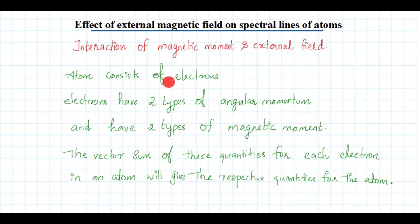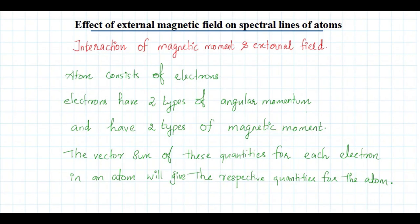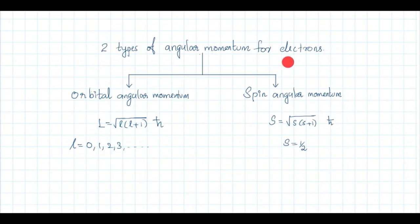Every atom consists of electrons, and each electron possesses two types of angular momentum: orbital angular momentum as well as spin angular momentum. Also, for each electron there are two types of magnetic moment: one is orbital magnetic moment and the other one is spin magnetic moment. If you add these quantities vectorially for each electron, you will get the corresponding quantity for the atom.